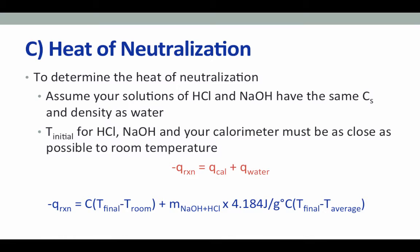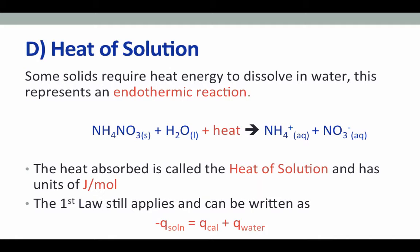The last step is to determine enthalpy by dividing the heat of reaction by the moles of product produced. In part D, we look at an endothermic reaction from dissolving ammonium nitrate in water — this is called the heat of solution. Some solids require heat energy in order to dissolve, and ammonium nitrate is one of these. When you perform this reaction, the solution becomes quite cold. Like heat of neutralization, the heat of solution is a stoichiometric term given in joules per mole. Because we are putting heat into the reaction, we expect the enthalpy to be a positive value, as it is an endothermic enthalpy.